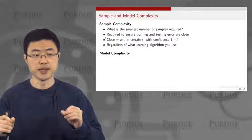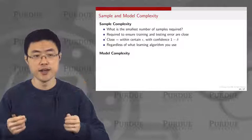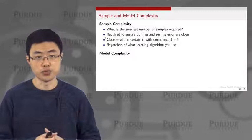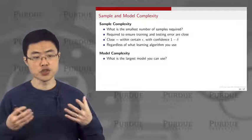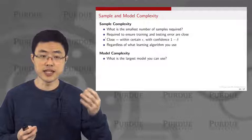That tells you the number of training samples you need for a particular hypothesis set, using a particular learning algorithm under a particular distribution. So you want to understand what is the sample complexity under all these circumstances. The concept of model complexity tells you what is the largest model you can use — in terms of VC dimension, what is the largest VC dimension you can achieve.